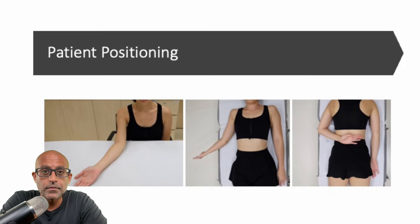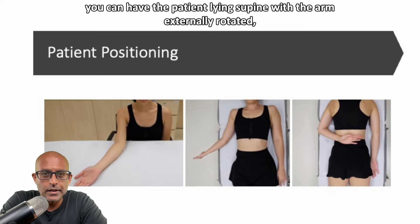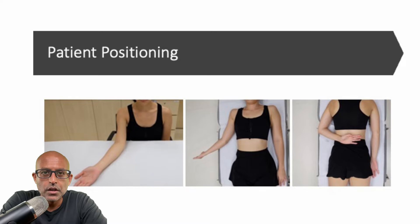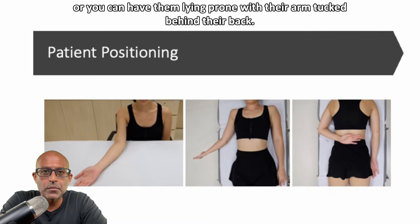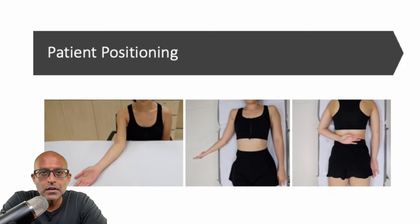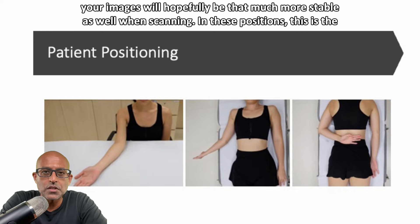Just as a reminder, when undertaking injections or imaging of the medial aspect of the elbow, you can have the patient lying supine with the arm externally rotated, you can have them sitting opposite to you with the arm resting on the examination couch, or you can have them lying prone with their arm tucked behind their back. This latter position is most stable and sometimes most comfortable for the patient, and it means that your images will hopefully be that much more stable as well.